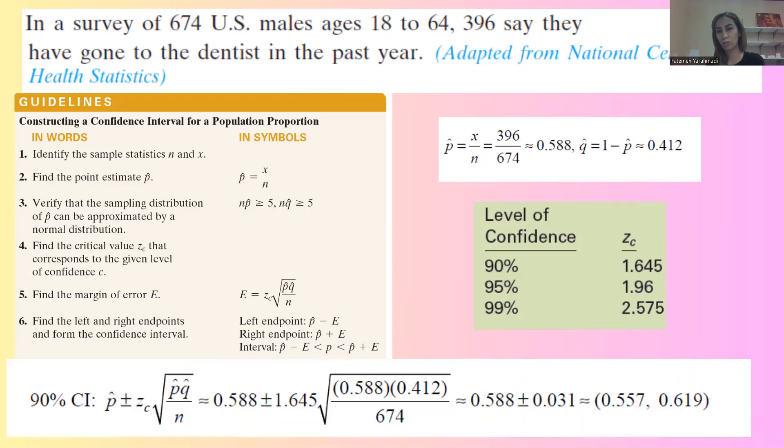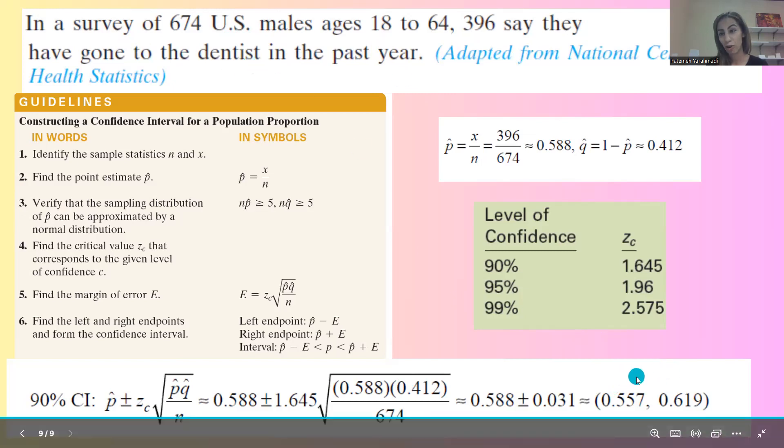So what is our conclusion? Our conclusion is we are 90% confident that the population proportion of U.S. males ages 18 to 64 that they've gone to dentists in past year is in between 55.7% to 61.9%.